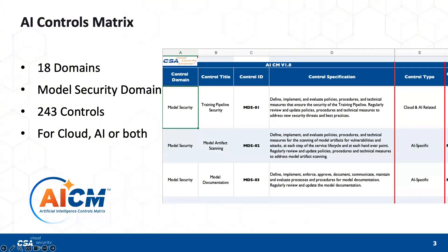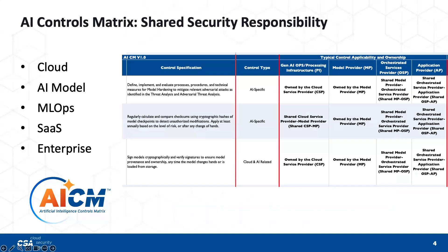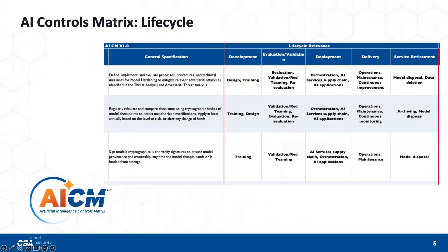When we characterize the controls, we try to evaluate and determine whether a control is specific to the AI portion or the cloud portion, to give you guidance on where to focus your efforts. One of the important areas that sets the AI Controls Matrix apart from other standards is the shared security responsibility. We've tried to articulate that carefully — the cloud portion, the AI model itself, the orchestration such as the ML ops training pipeline, and the applications, whether from enterprises or SaaS. Everyone has an important role, and certain controls apply to all of them, while certain controls apply to separate stakeholders.